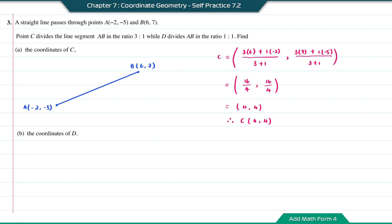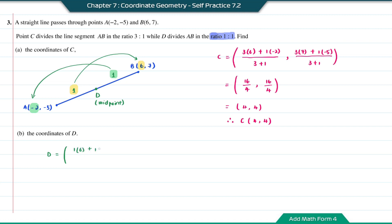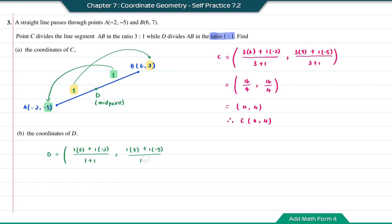Question B: find the coordinates of D. Based on the ratio 1 to 1, the coordinate of D is the midpoint, because it divides line segment AB into equal halves. The x-coordinate of D is 1 times 6 plus 1 times negative 2, divided by 1 plus 1. The y-coordinate is 1 times 7 plus 1 times negative 5, divided by 1 plus 1. This equals 4 over 2 and 2 over 2. Simplifying, the answer is (2, 1).